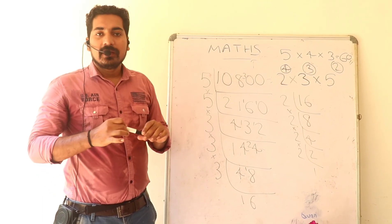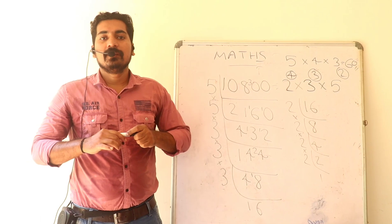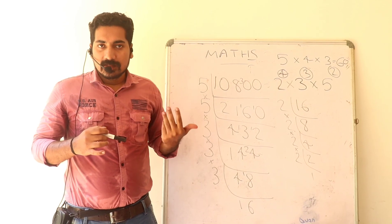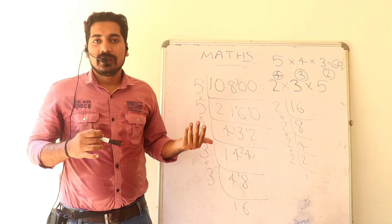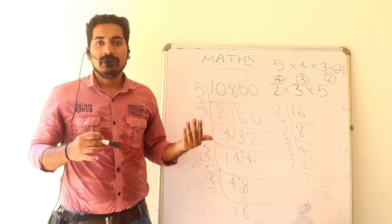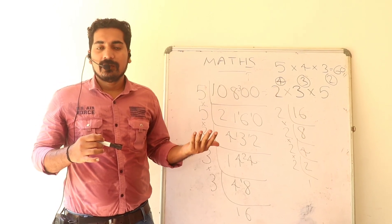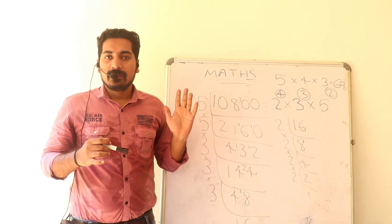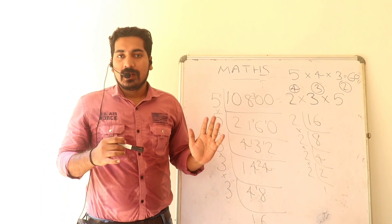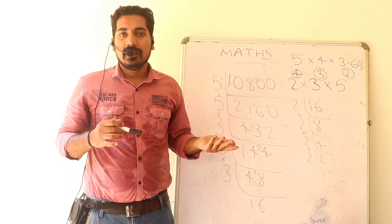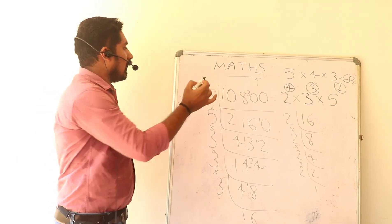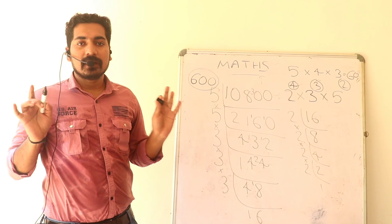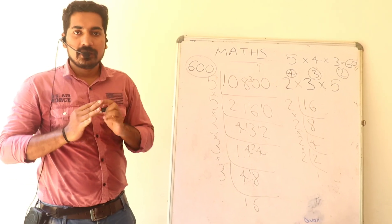Okay, the number of divisors is 60. If you have any questions, please comment on this online class. Please like, subscribe, and share. You will find the number of divisors. Thank you.